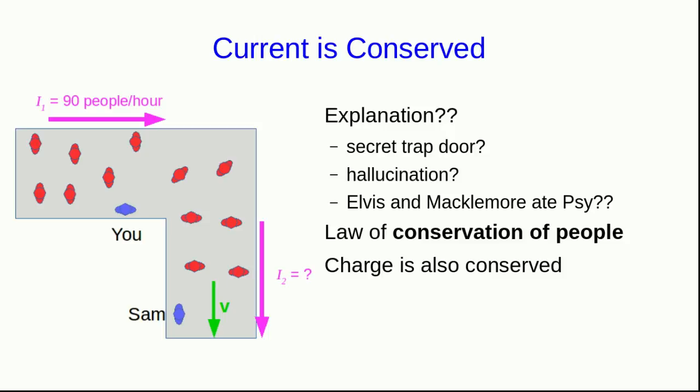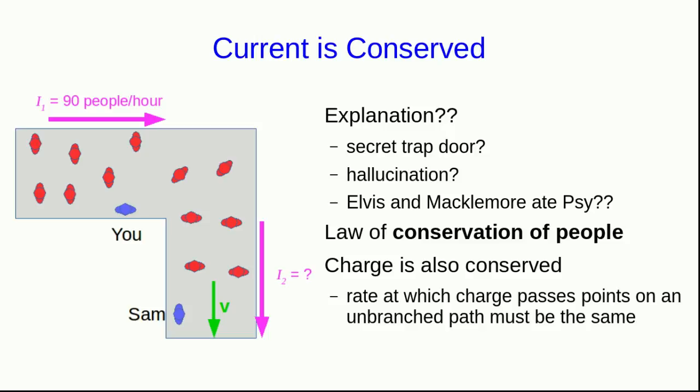Likewise, charge is conserved just like people walking down hallways and in particular things like electrons are conserved. And so the rate at which charge passes by points on any unbranched path must always be the same. And when I say on an unbranched path I mean as long as there are no junctions or other ways that current splits or comes together.